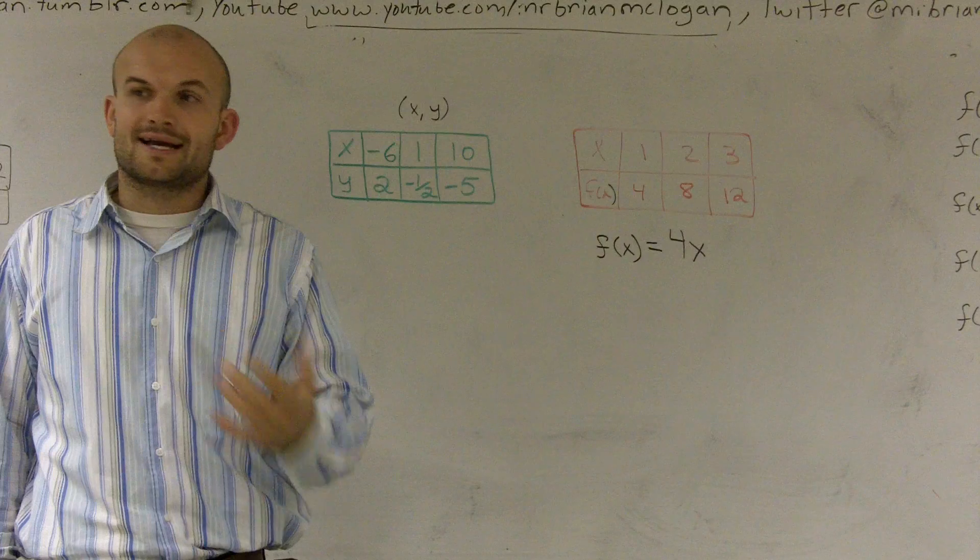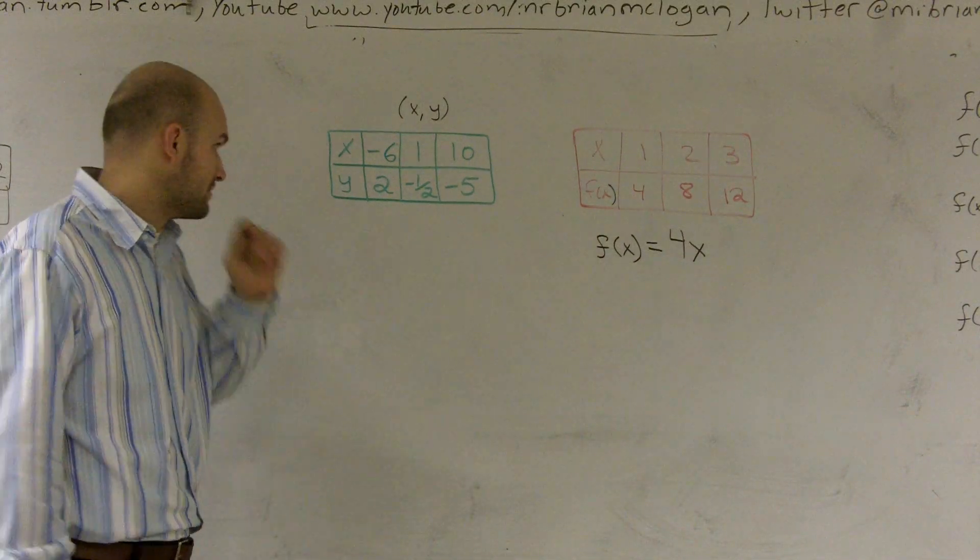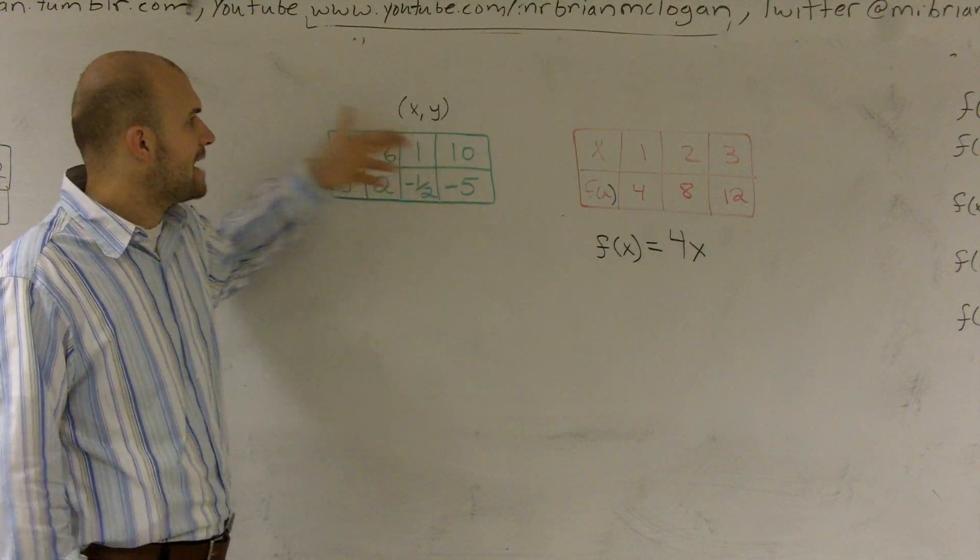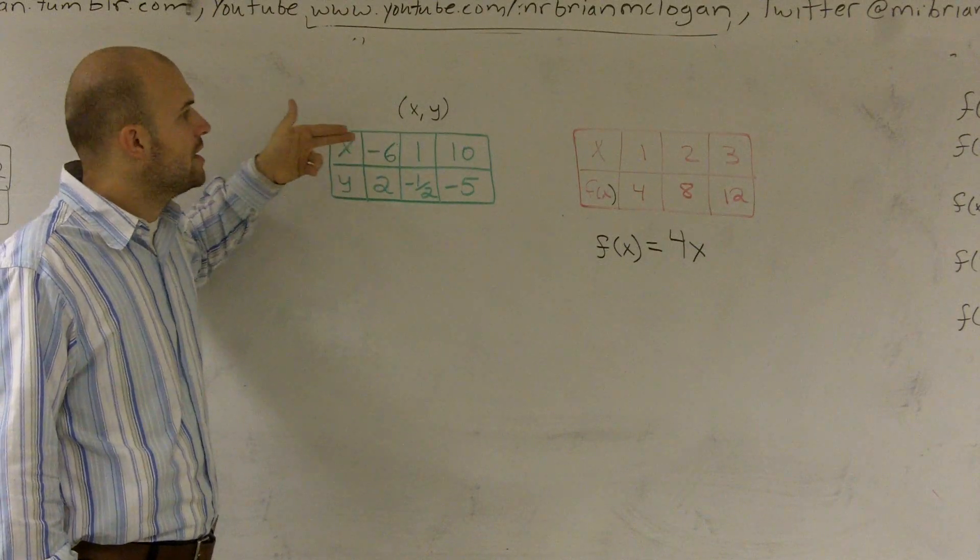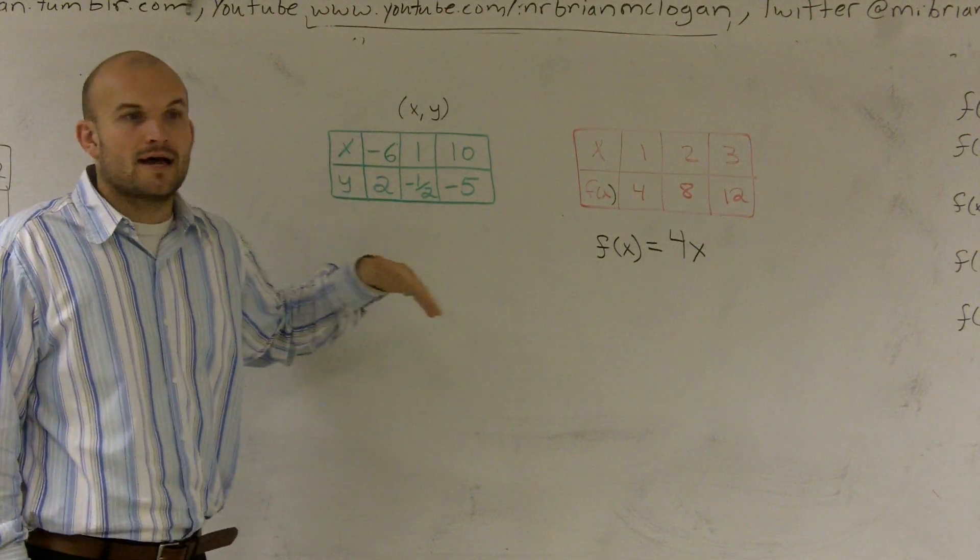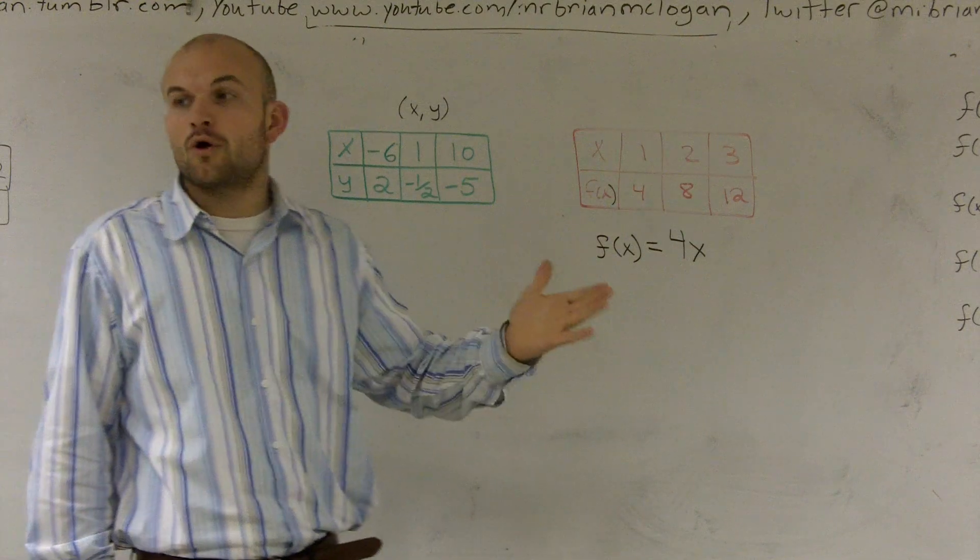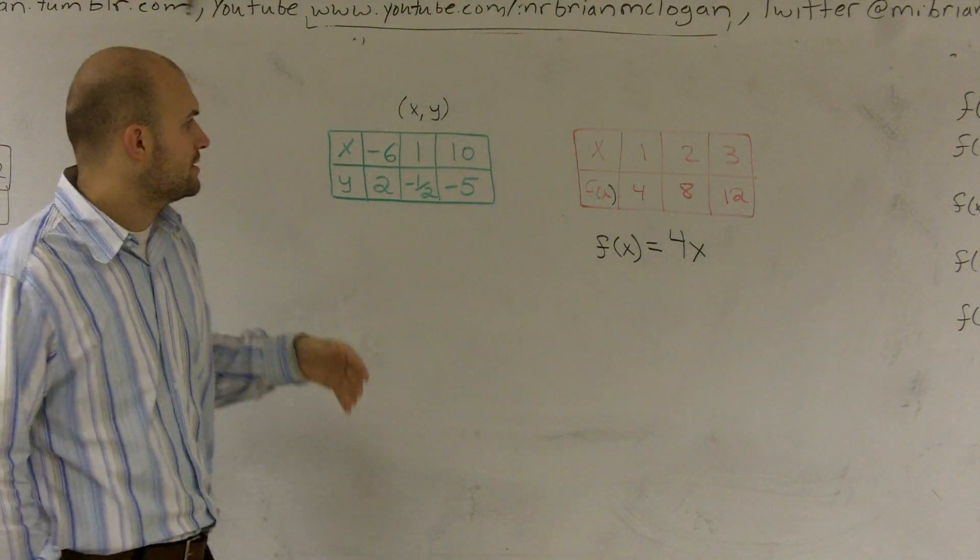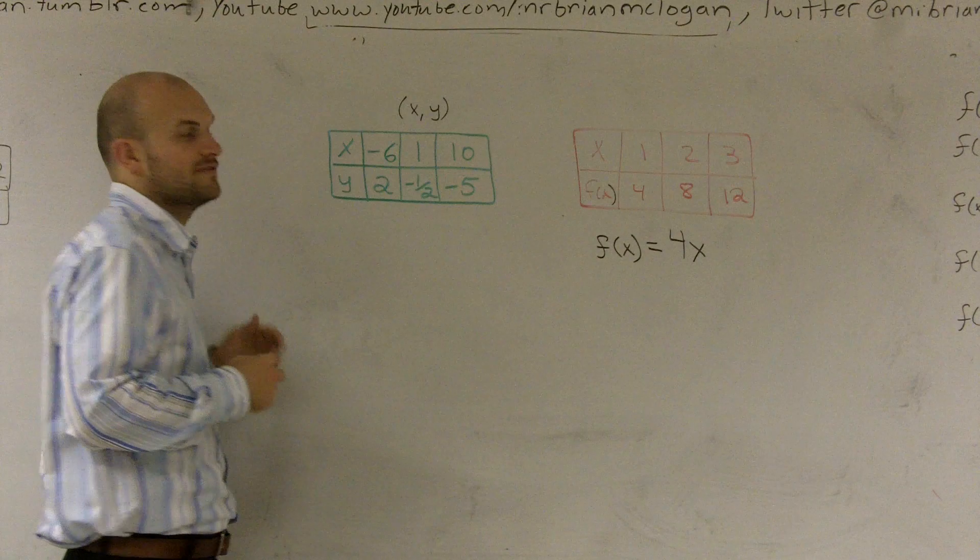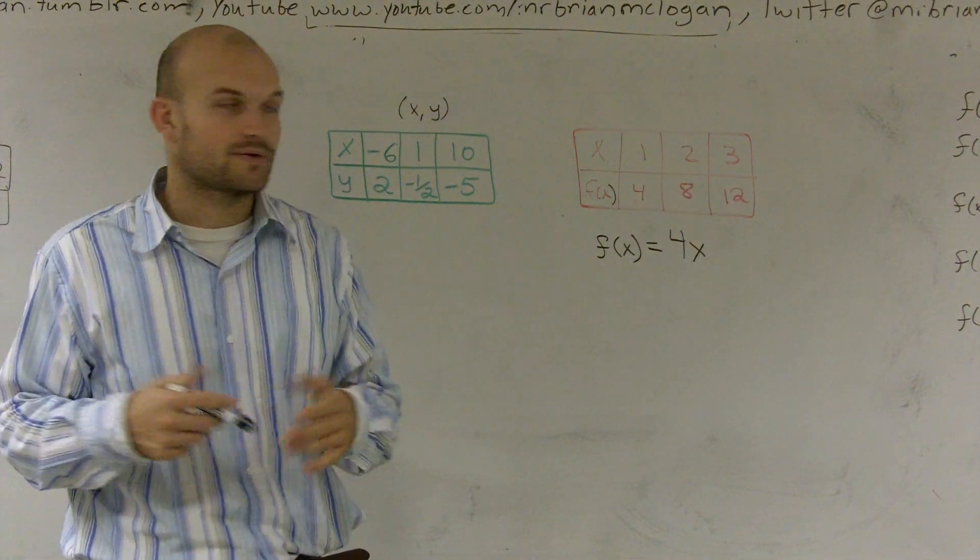I'm going to have to look to multiplication or division. Well, since my top number, since my input values are larger than my output values, I'm going to have to multiply by a fraction or divide by a number. So I say, all right, well, what do I have to do to get from 10 to negative 5? You could say, well, you can divide by 2, right?